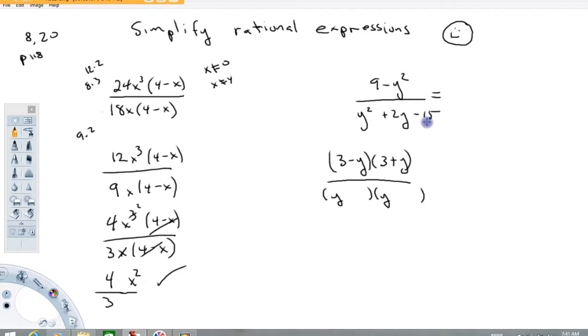Factors of 15. Well, let's see, 5 and 3. So we might try something like, how about (y - 5)(y + 3), and I'm just guessing right now.